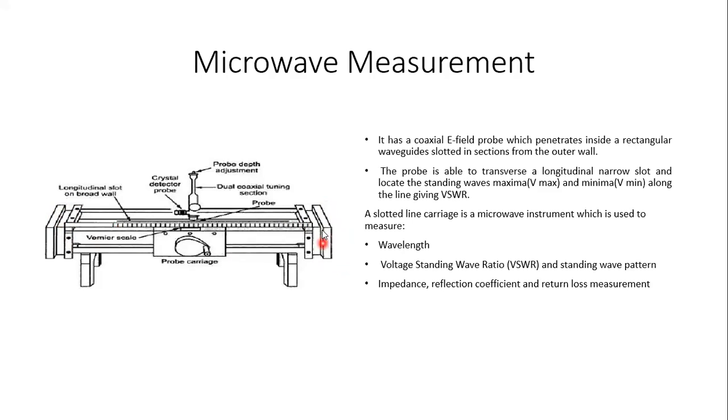Here you can see this is a rectangular waveguide. There is a thin line, which is nothing but a slit here, and inside through the slit, a coaxial cable is inserted.